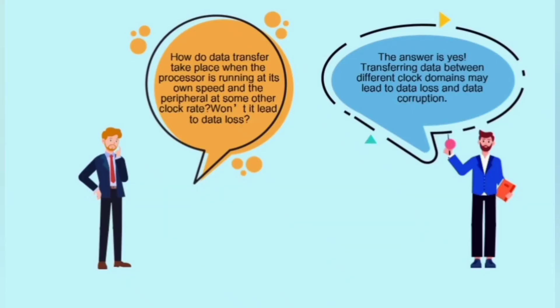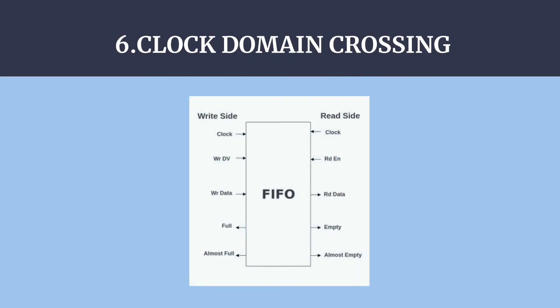Next, how do data transfer take place when the processor is running at its own speed and the peripheral at some other clock rate? Would it lead to data loss? The answer is yes. Transferring data between different clock domains may lead to data loss and data corruption. To avoid this, we have used FIFO which is designed using a dual port block RAM.